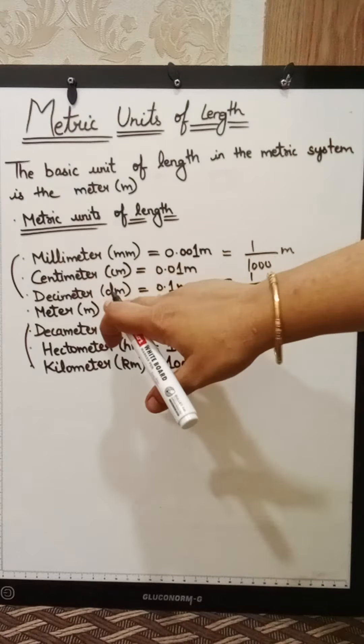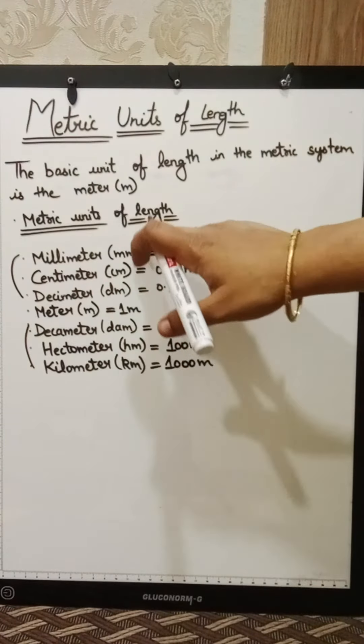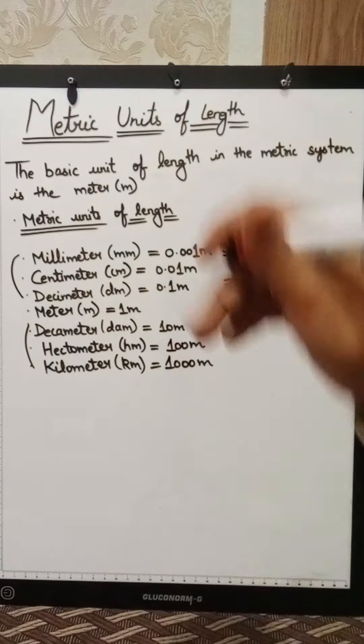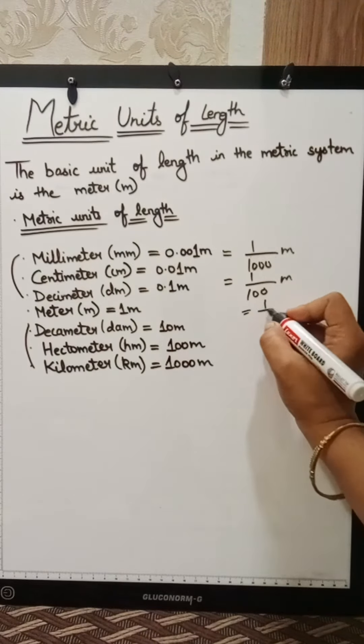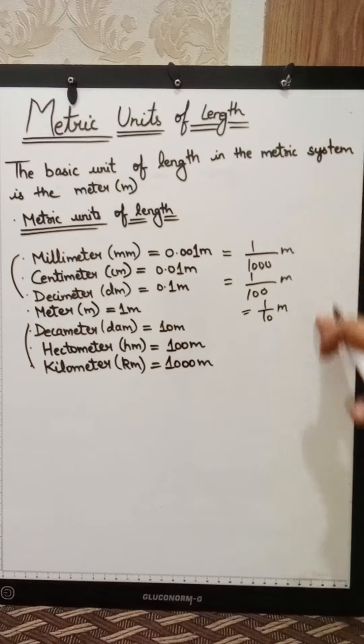It is decimeter, dm short form. Look, the meter is coming around. How can we write this? How do we write dm? 1 upon 10 meter. So this is done.